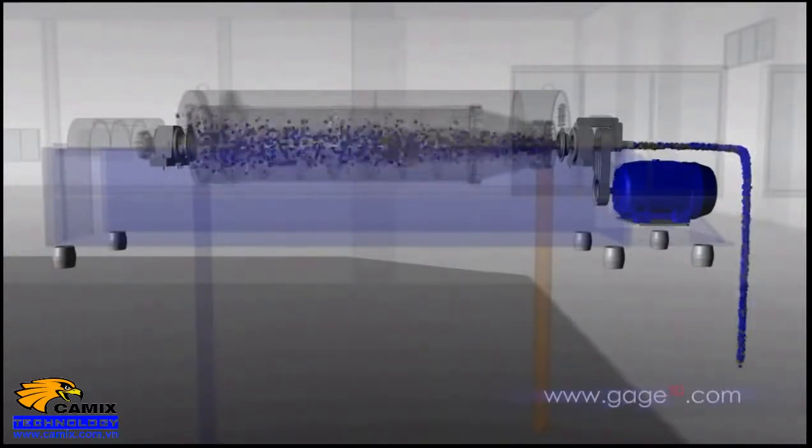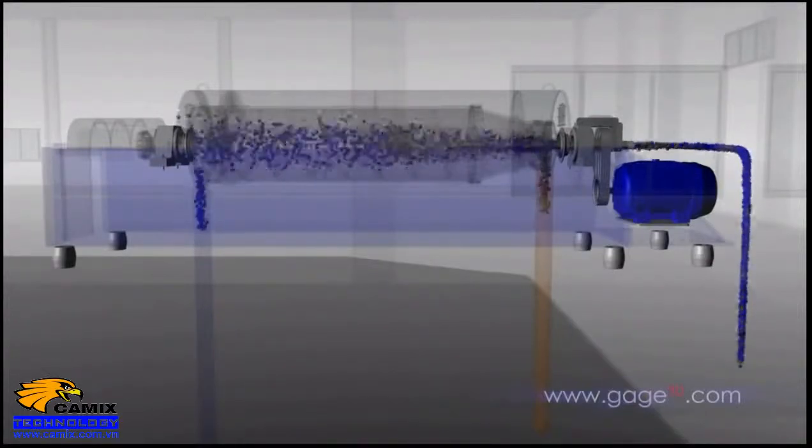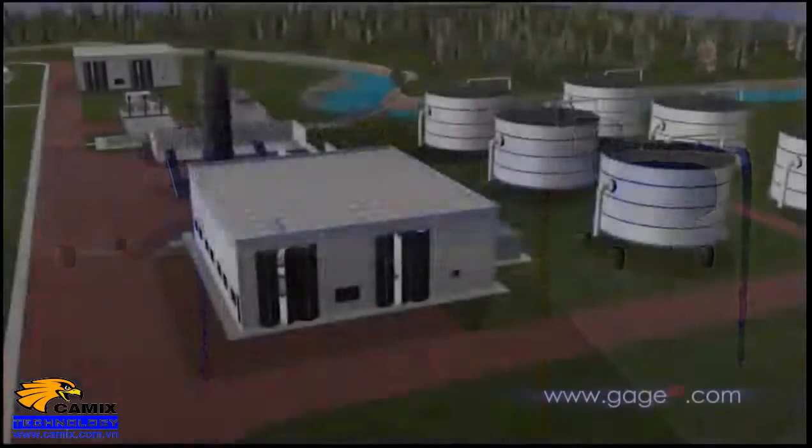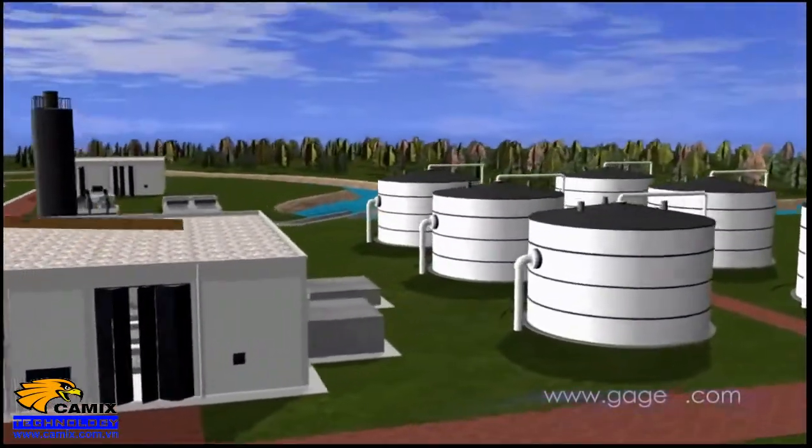The first step shown here is a centrifuge, which uses a spinning action to separate the water from the solids. The water that is removed goes back to the beginning of the treatment process, the headworks.